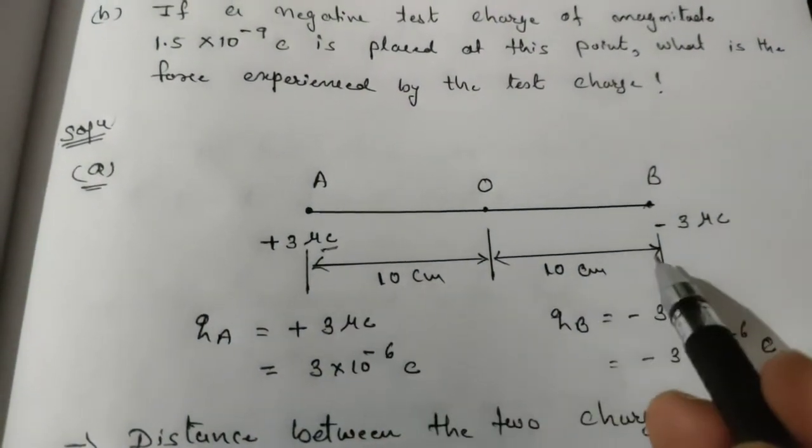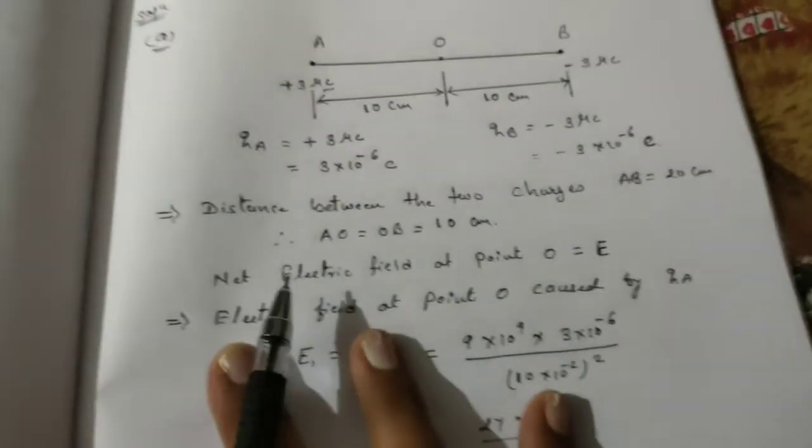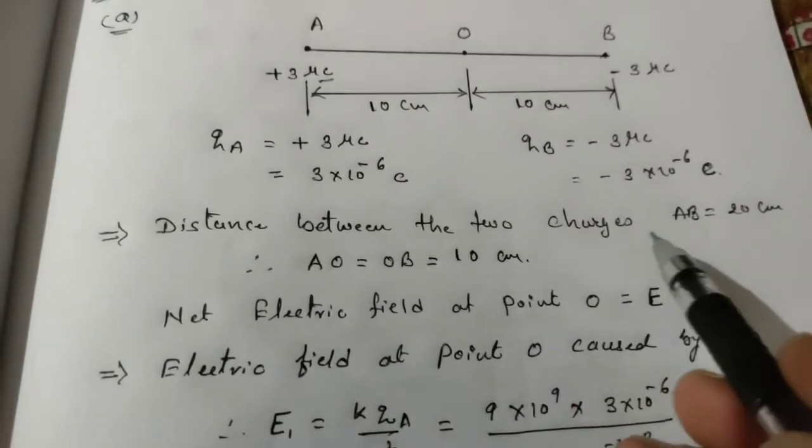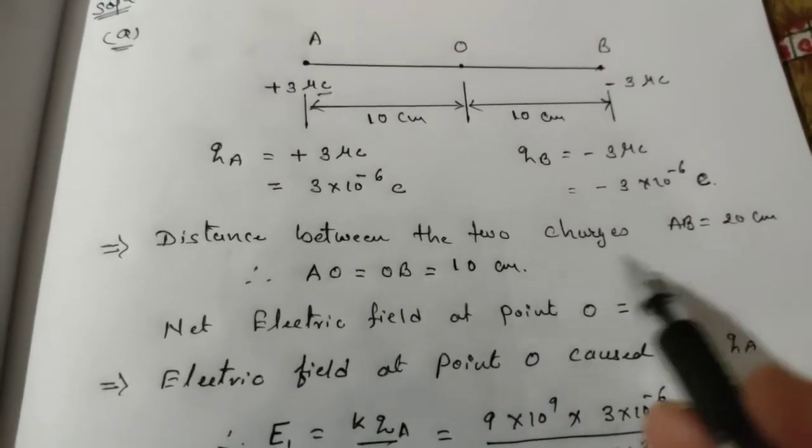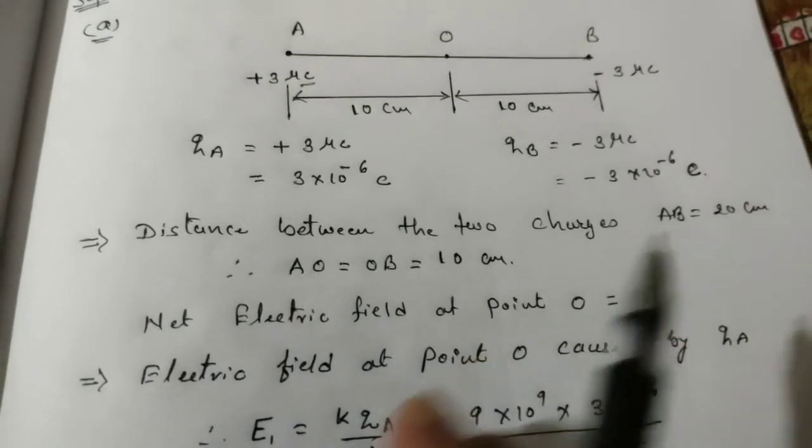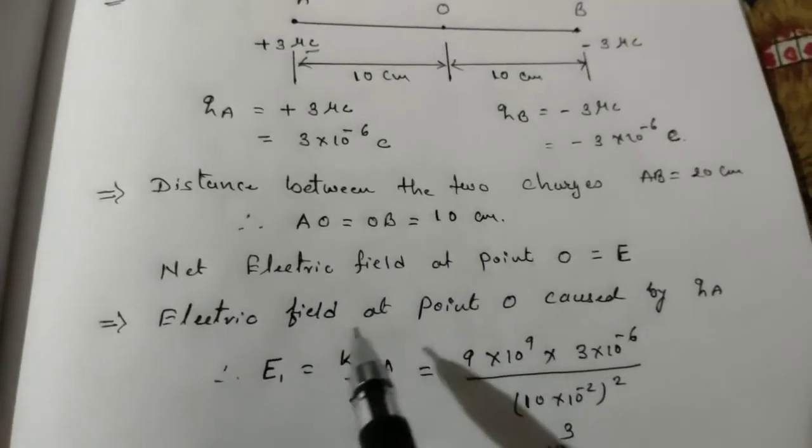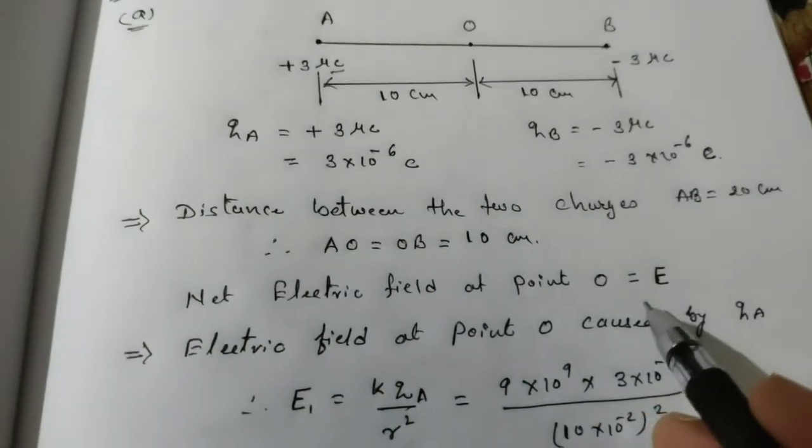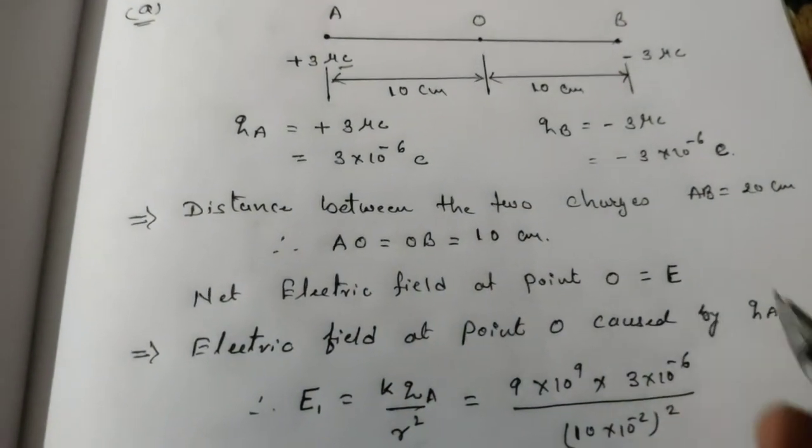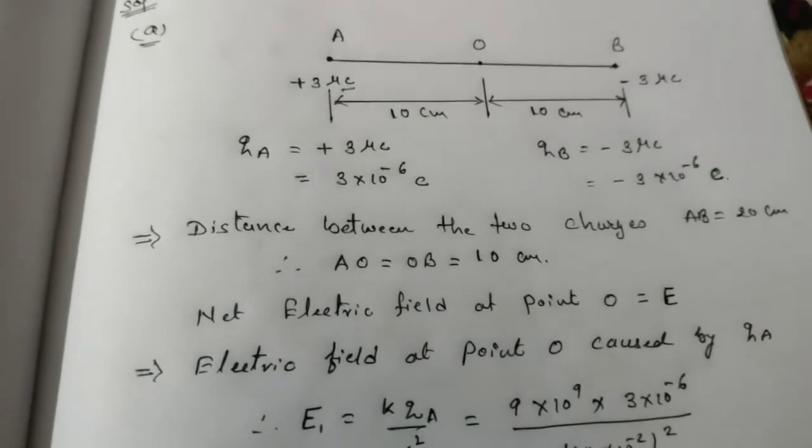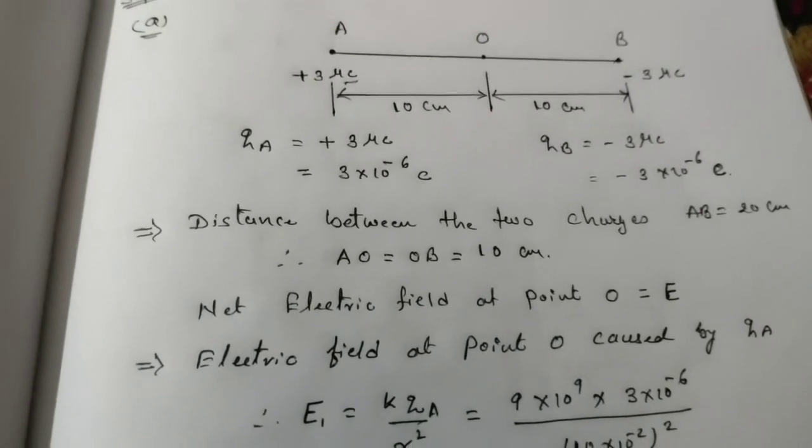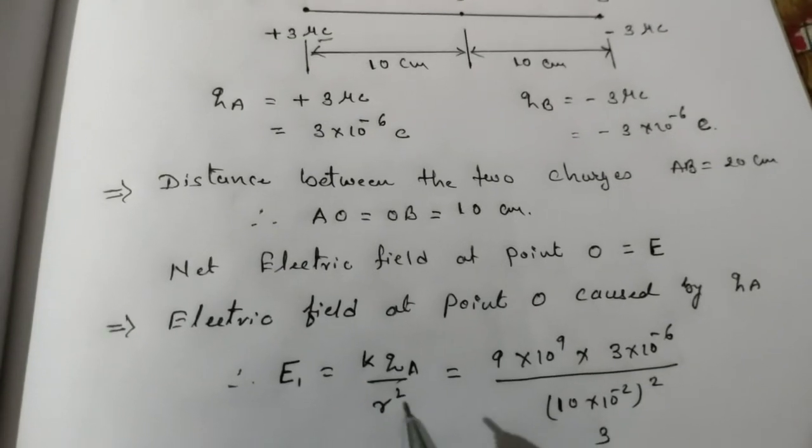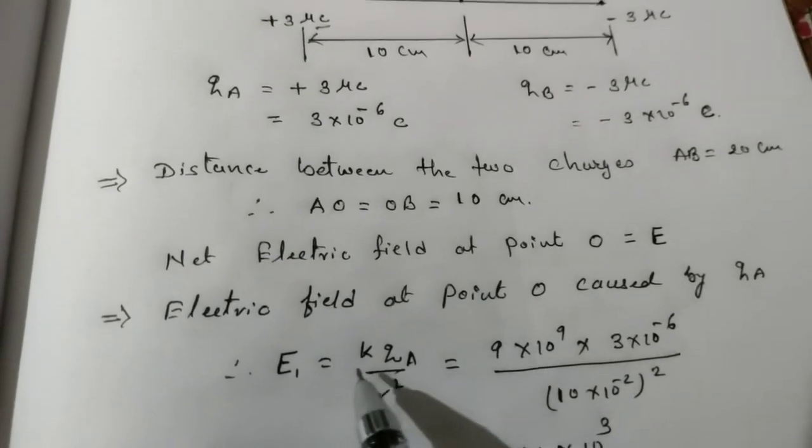Now let's solve the first problem. Distance AO and OB equal 10 centimeters. Net electric field at point O equals E. As per the theory, we have the electric field formula E = KQ/R².